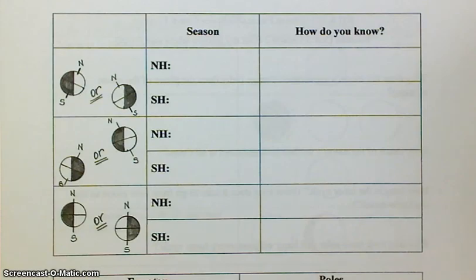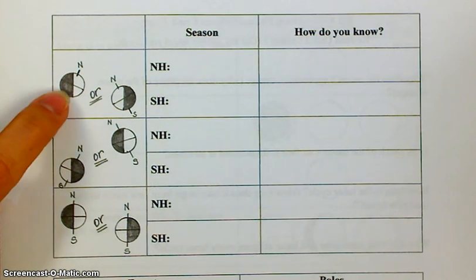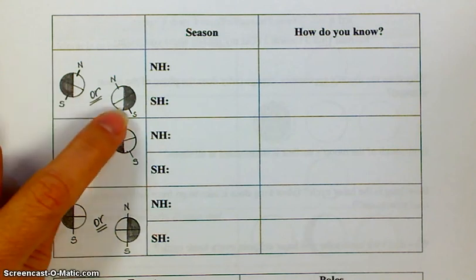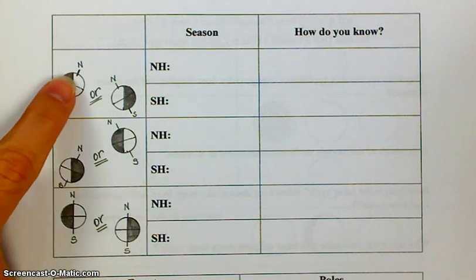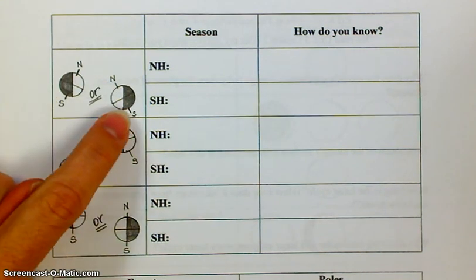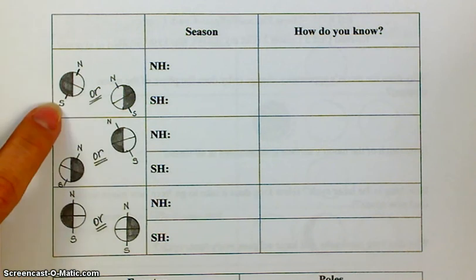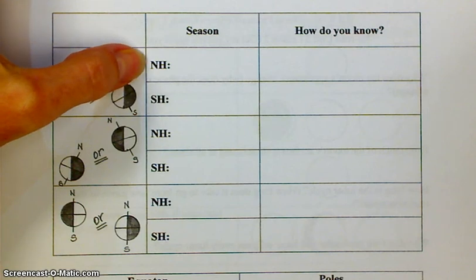Now we're going to look at some illustrations similar to some of the things you've seen on the diagrams. Notice that these two are the same season — you might be looking at the Earth from one side of the solar system, then from the opposite side. It's the same season because in both cases the northern hemisphere is on the daytime side of the terminator and the southern hemisphere is on the nighttime side. So this is summer for the northern hemisphere.